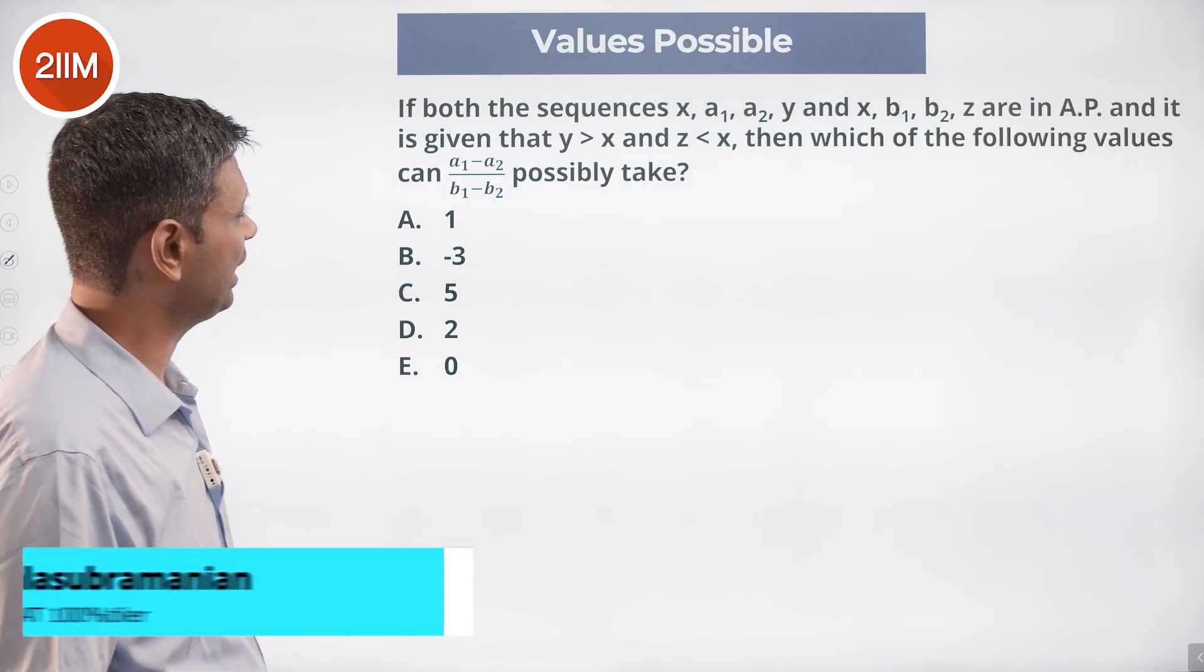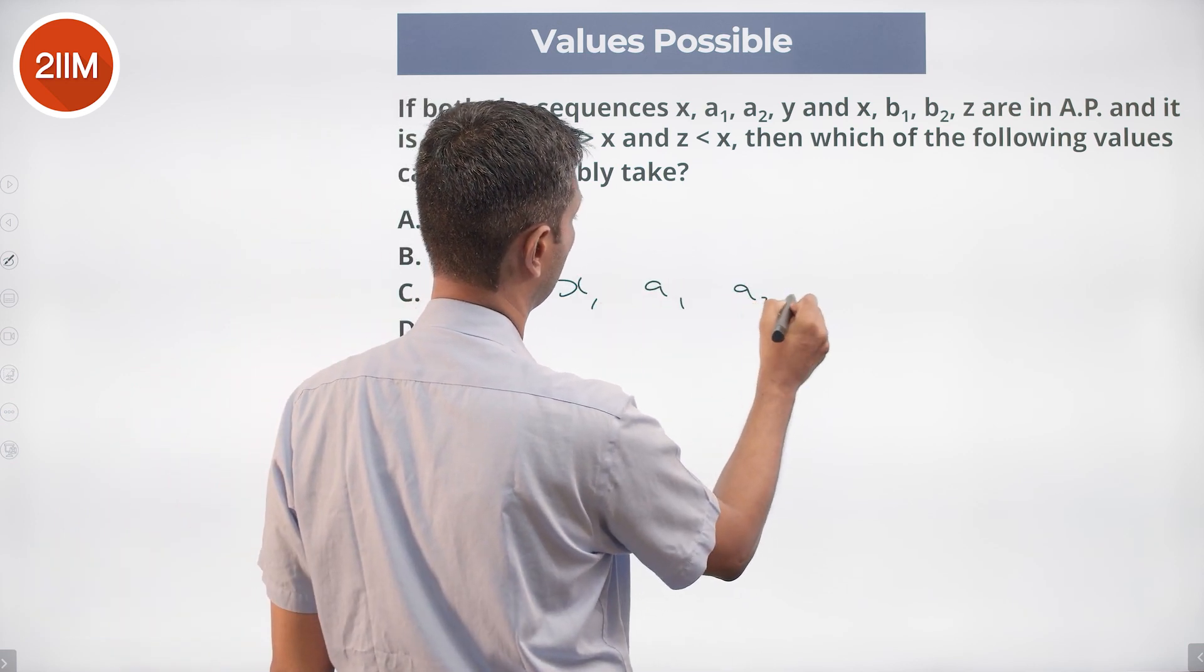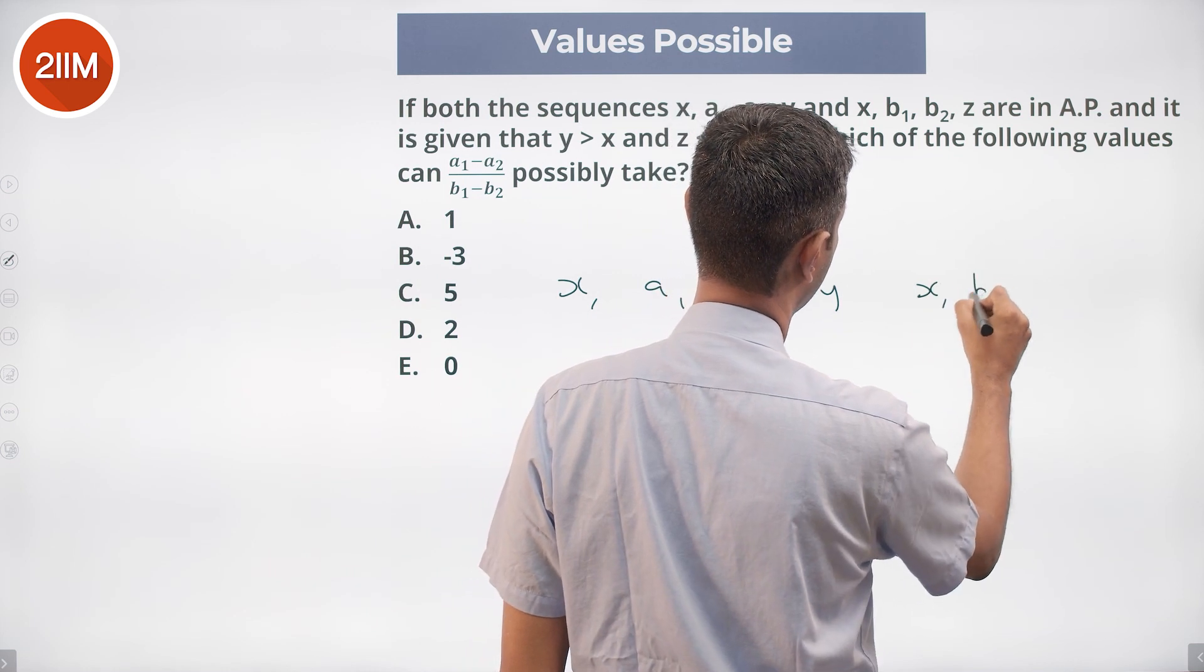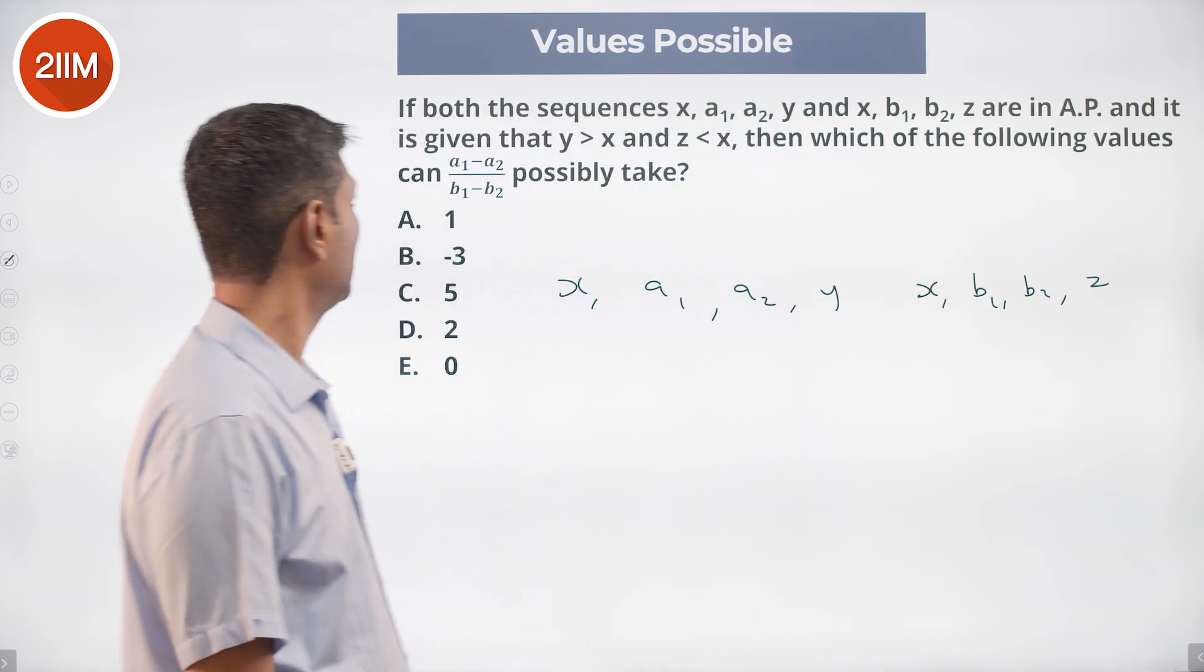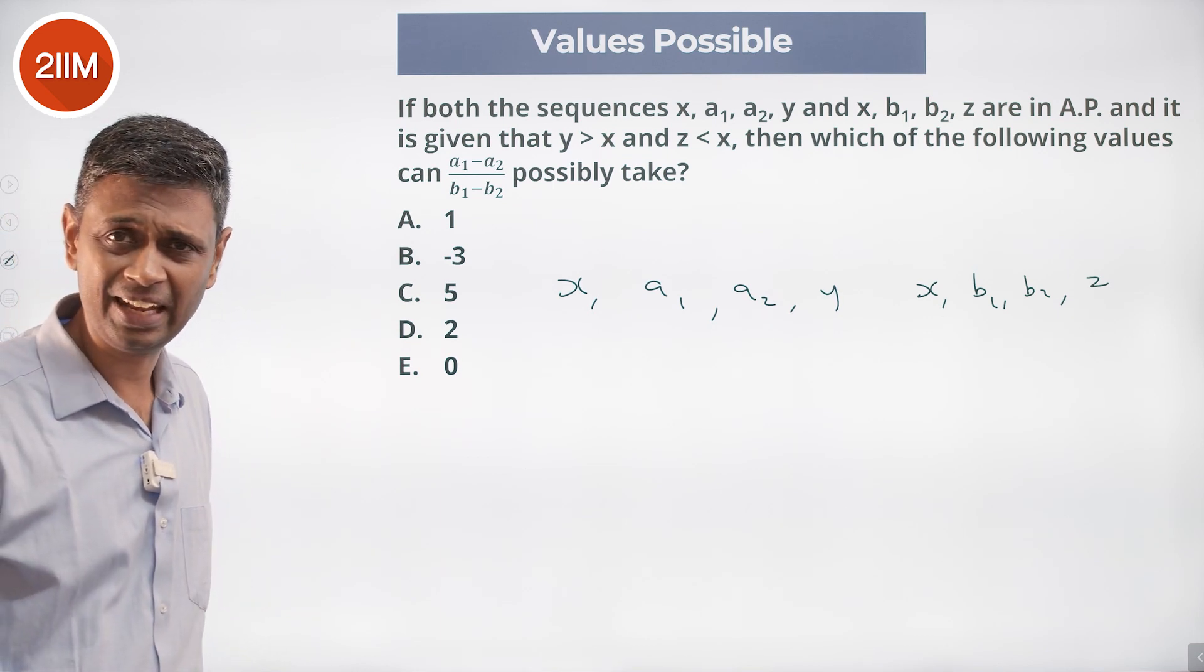If both the sequences x, a1, a2, y and x, b1, b2, z are in AP and it is given that y is greater than x and z is less than x.